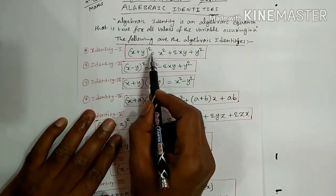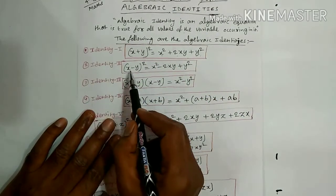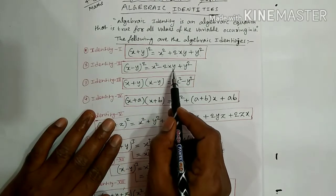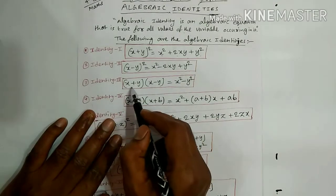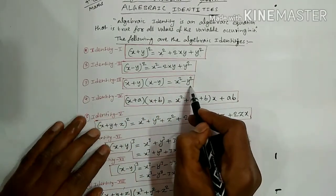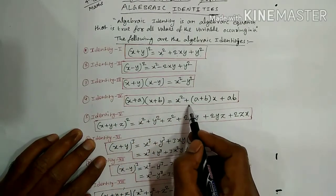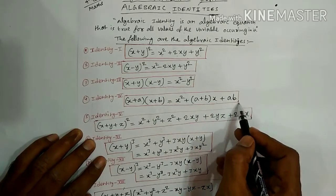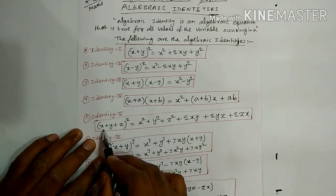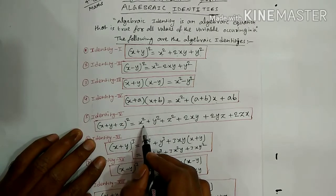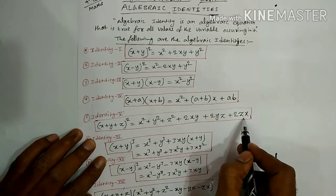Identity 1: X plus Y whole square equals X square plus 2XY plus Y square. Identity 2: X minus Y whole square equals X square minus 2XY plus Y square. Identity 3: X plus Y into X minus Y equals X square minus Y square. Identity 4: X plus A into X plus B equals X square plus (A plus B)X plus AB. Identity 5: X plus Y plus Z whole square equals X square plus Y square plus Z square plus 2XY plus 2YZ plus 2ZX.